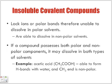If a compound possesses both polar and non-polar components, it may dissolve in both types of solvents. For example, acetic acid is able to form hydrogen bonds with water, and the CH3 end is considered non-polar. So it has a non-polar entity to it, but it also has a polar aspect. Because it has the polar component, it is still able to dissolve in a polar solvent such as water.